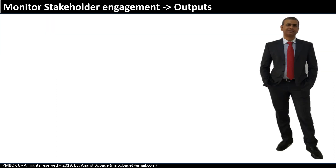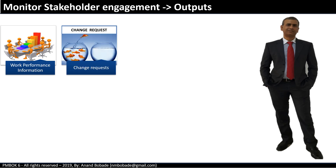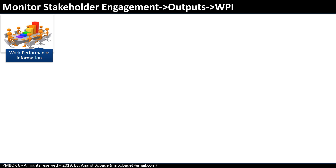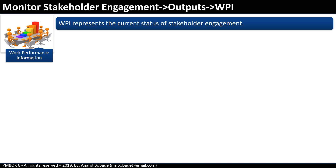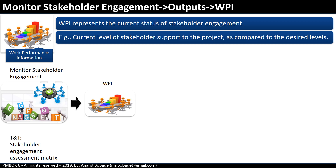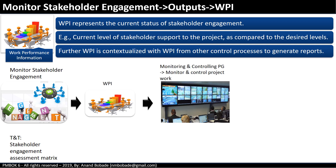The outputs are: work performance information, change requests, project management plan updates, and project document updates. Work performance information (WPI) represents the current status of stakeholder engagement. WPI is generated when tools and techniques such as the stakeholder engagement assessment matrix are used — it tells you the level of stakeholders' support compared to the desired level. WPI is also contextualized with information from other control processes to generate reports.